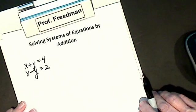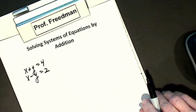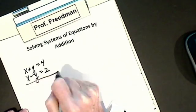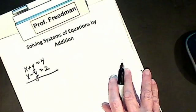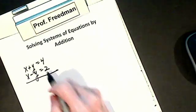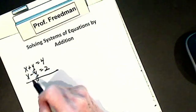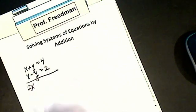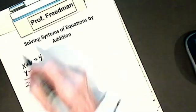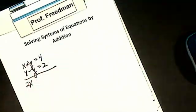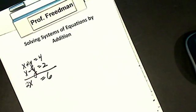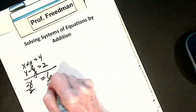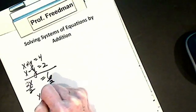To solve a system by addition, we're adding the two equations together — if I was graphing them, I'd be finding the point of intersection. So to solve this system, if I add them, I can add 1x and 1x, I get 2x. If I add my y's, plus y minus y go to 0, I get 2x equals 6 pretty quick. I solve the equation, divide by 2, x is going to be 3.